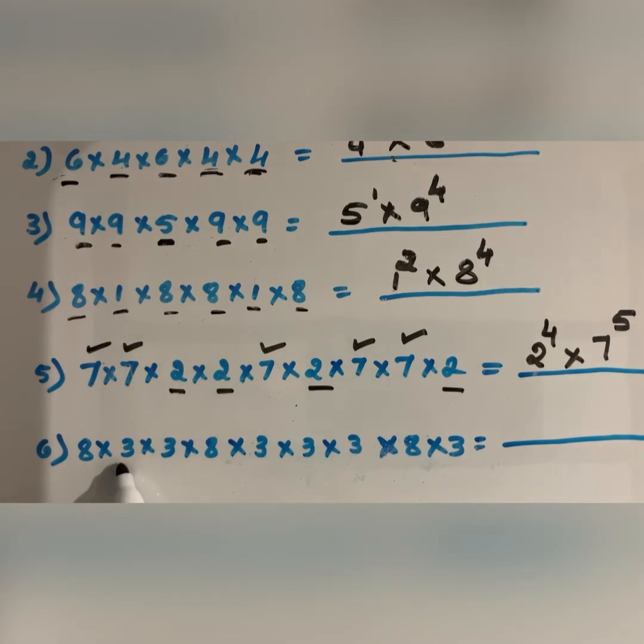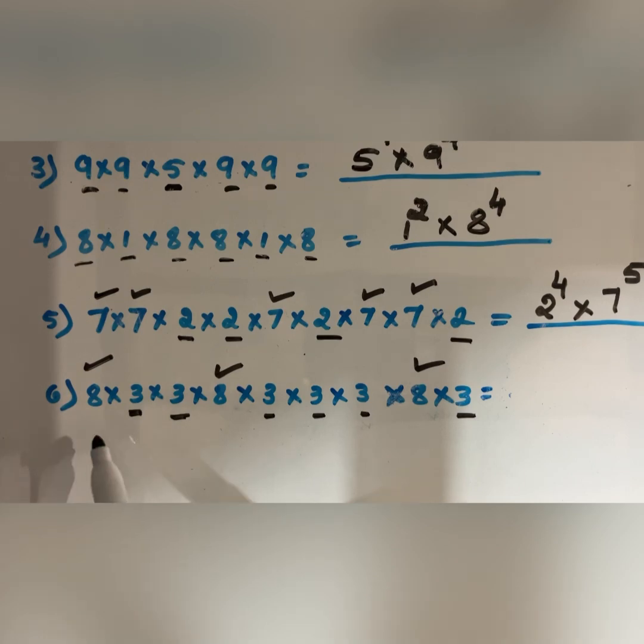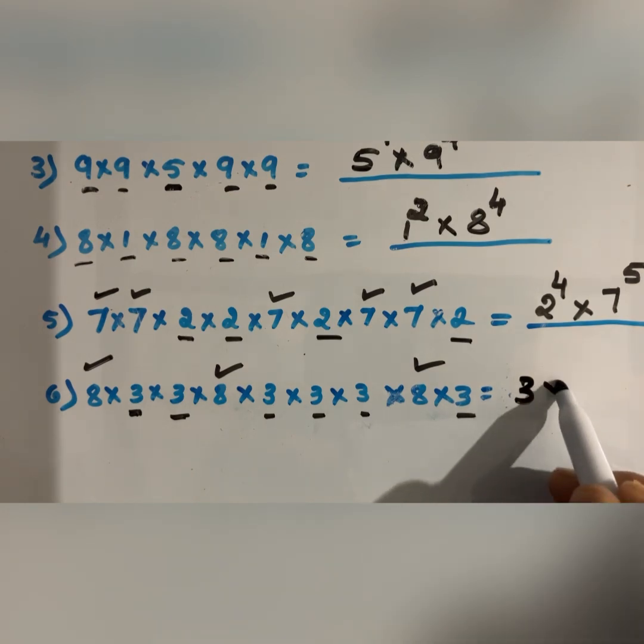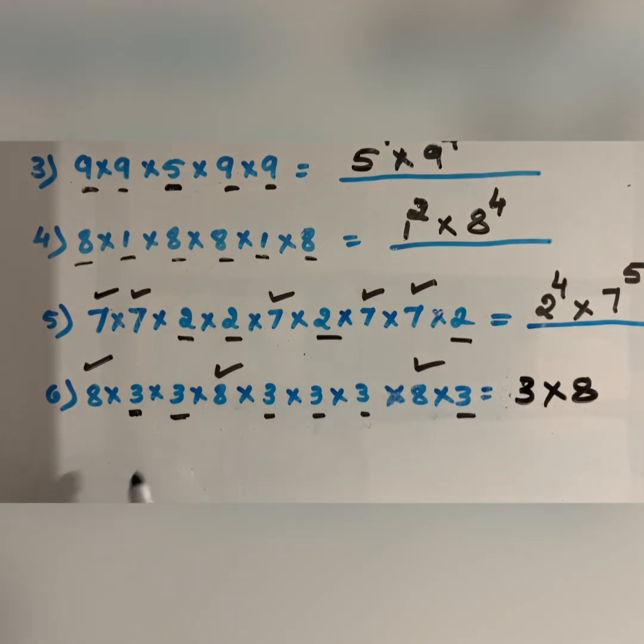The last one. Let's take the smaller number first. We have 2 bases here: 3 and 8. How many 3's are there? 1, 2, 3, 4, 5, 6—so 3 to the power 6. How many 8's are there? 1, 2, 3, 4, 5, 6.